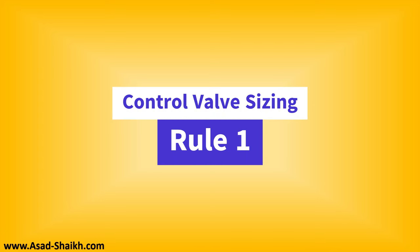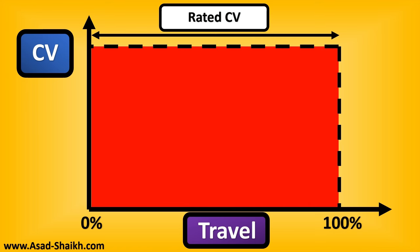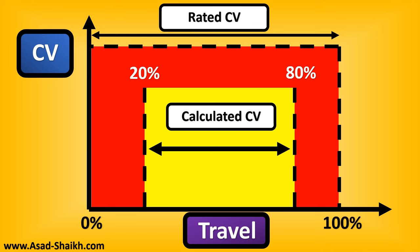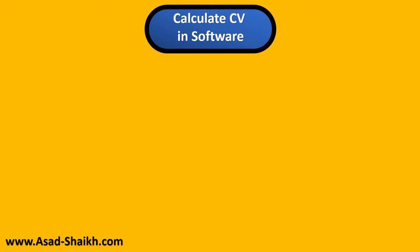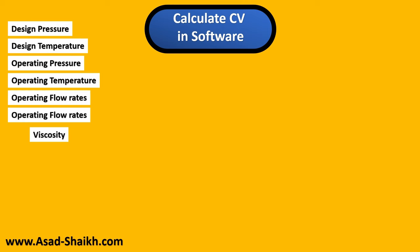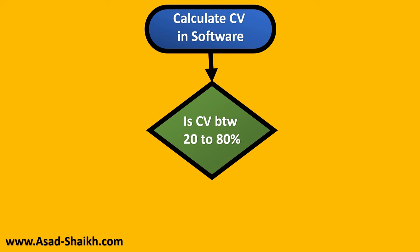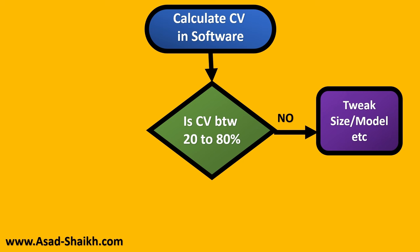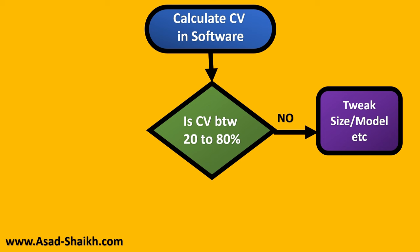This gives us the first rule of control valve sizing: in terms of capacity, the calculated CV must be within 20 to 80 percent of the rated CV. When you put all the process parameters in and get the CV at minimum, normal, and maximum conditions, those values should be within 20 to 80 percent of the rated CV. If not, you need to tweak the size or model. The valve should be at least one size less than the line, and it is preferred not to make the control valve too small.